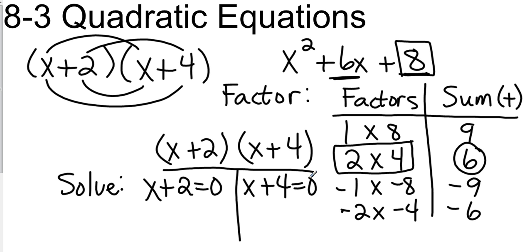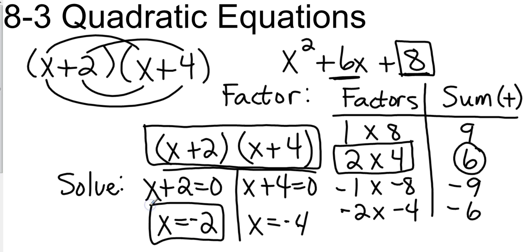This one, I'm going to subtract 2 to the other side. So that gives me negative 2. This one, I'm going to subtract 4 to the other side. So that gives me negative 4. So they may just ask you to factor. If they ask you to factor, then you stop here. If they ask you to solve, then they want you to take the factors and set them equal to 0.